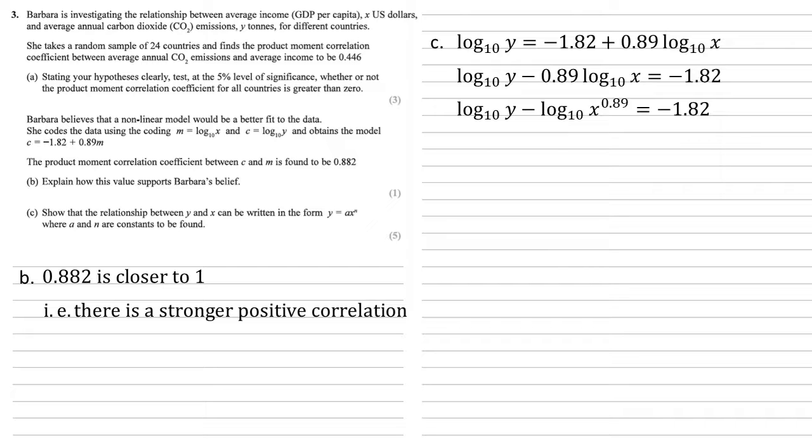We've now got two logs subtracting. So again, by rules of logarithms, we can bring them together. So it becomes a fraction inside. So we've now got log base 10 of y over x to the 0.89 equals minus 1.82.